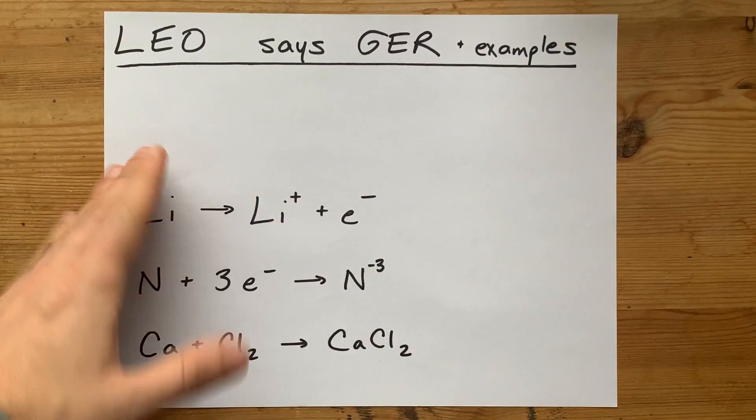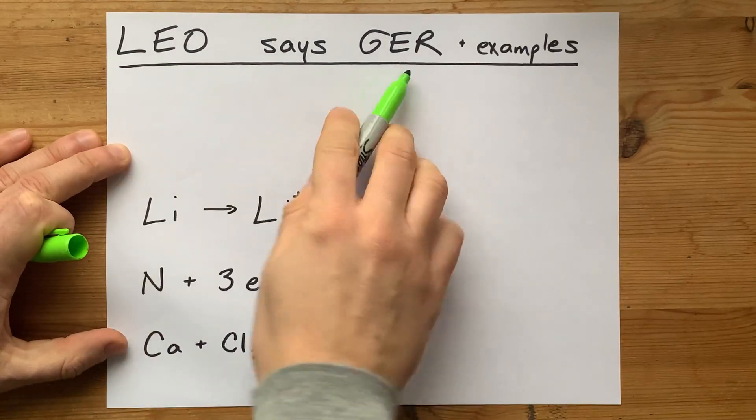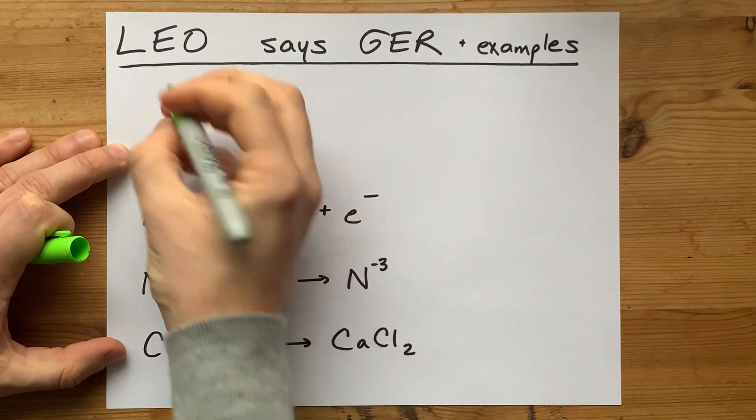Your teacher just wants you to remember the difference between oxidation and reduction. So they taught you LEO says GER.